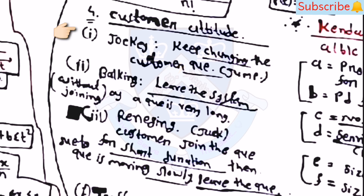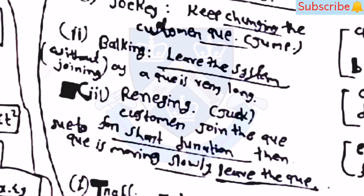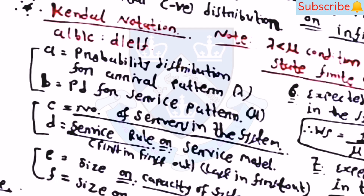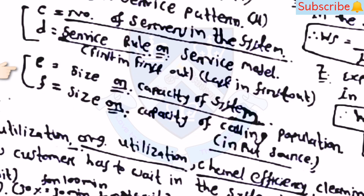Customer attitudes are of three types: jockeying (customer keeps changing queues), balking (customer leaves after long waiting), and reneging (customer joins queue for a short duration then leaves). The Kendall notation is: A/B/C/D/E/F, where A = arrival distribution, B = service distribution, C = number of servers, D = service rule, E = system capacity, F = calling population size.